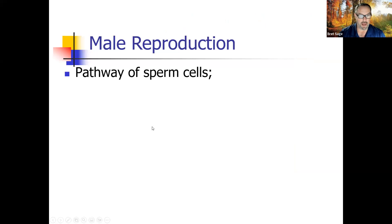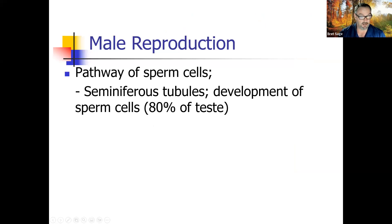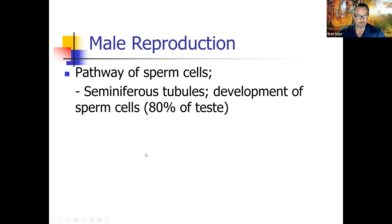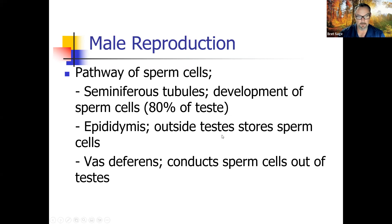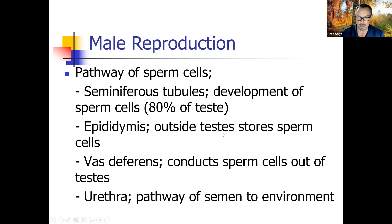The pathway of sperm cells: they start in the seminiferous tubules — where about 80% of the testis volume is used for sperm development. Larger testicles have more seminiferous tubules and produce more sperm. The epididymis on the outside of the testes stores sperm cells. The vas deferens conducts sperm cells out of the testes. The urethra is the pathway of semen to the outside.